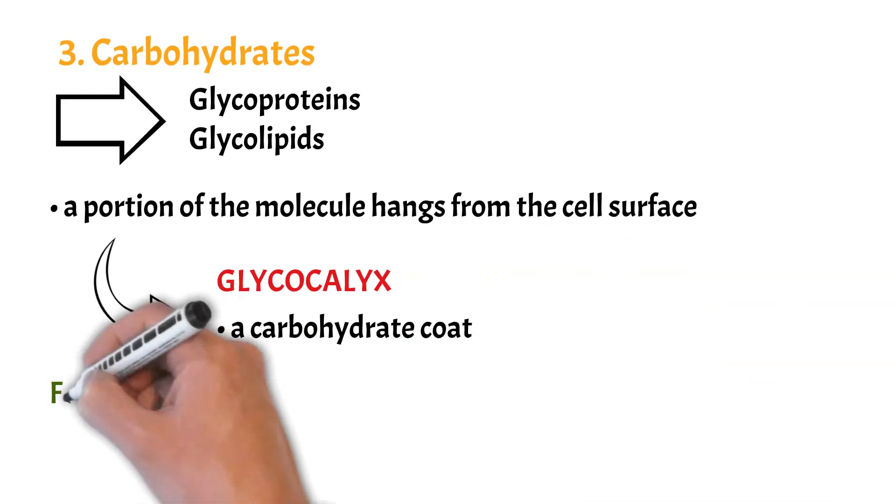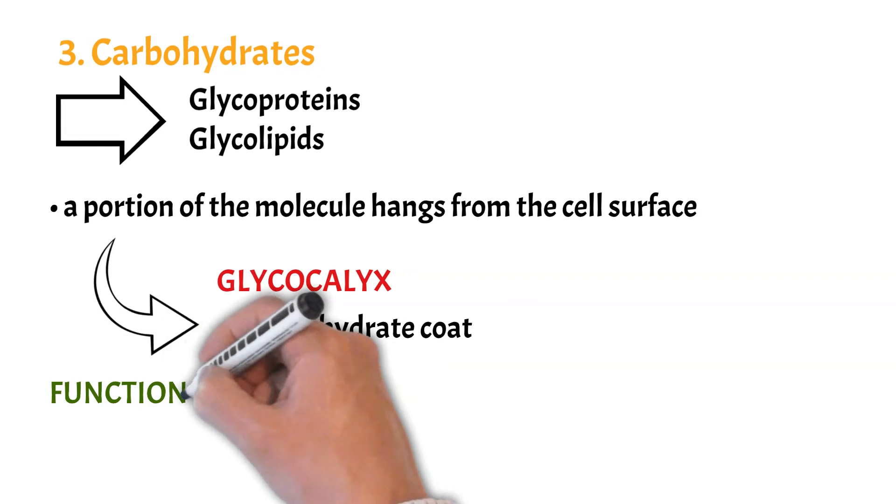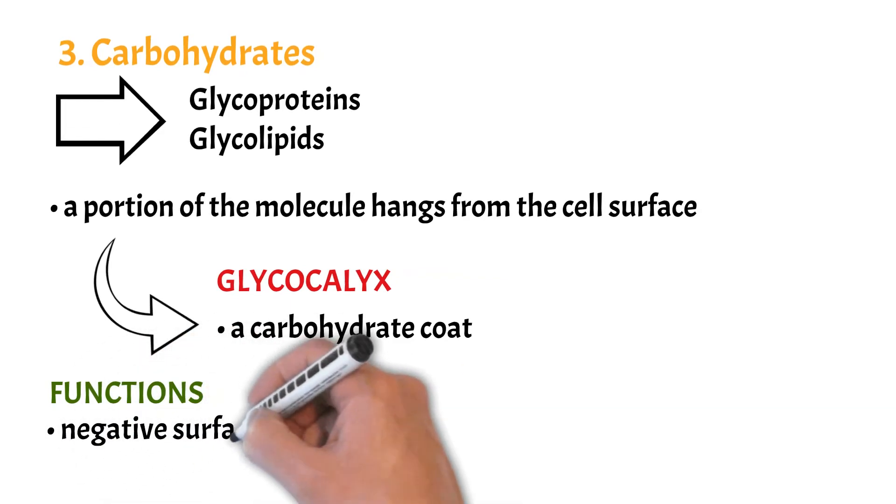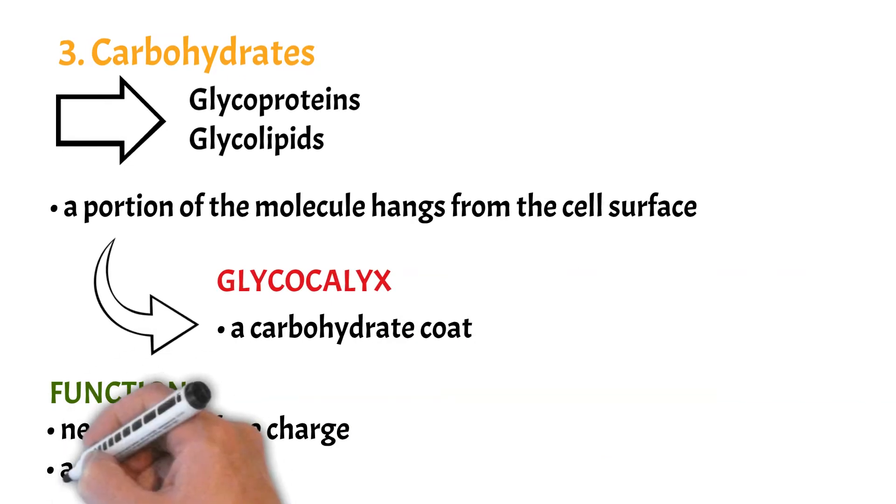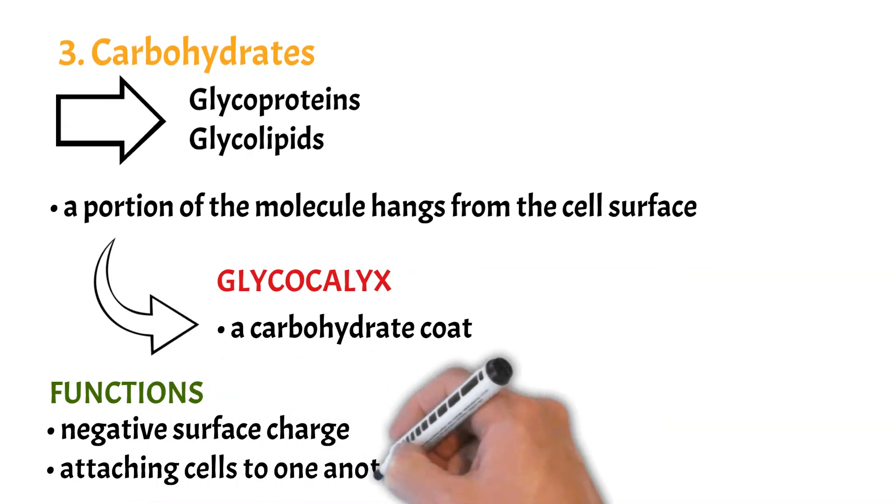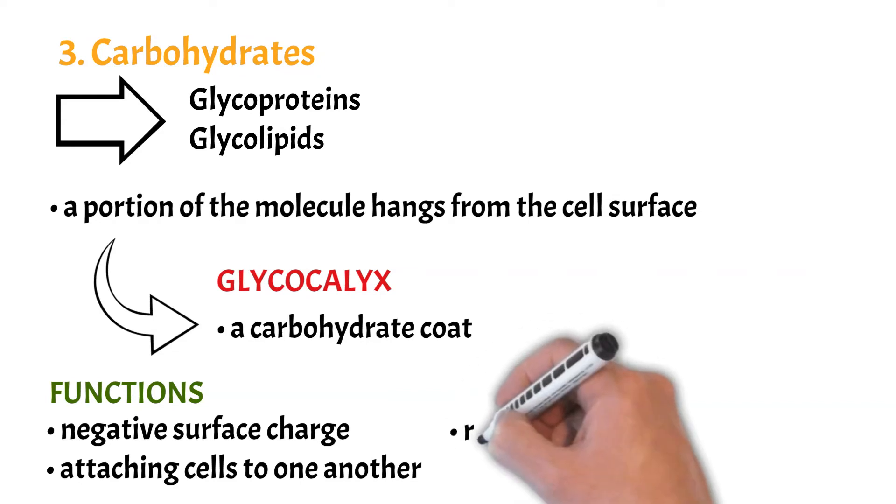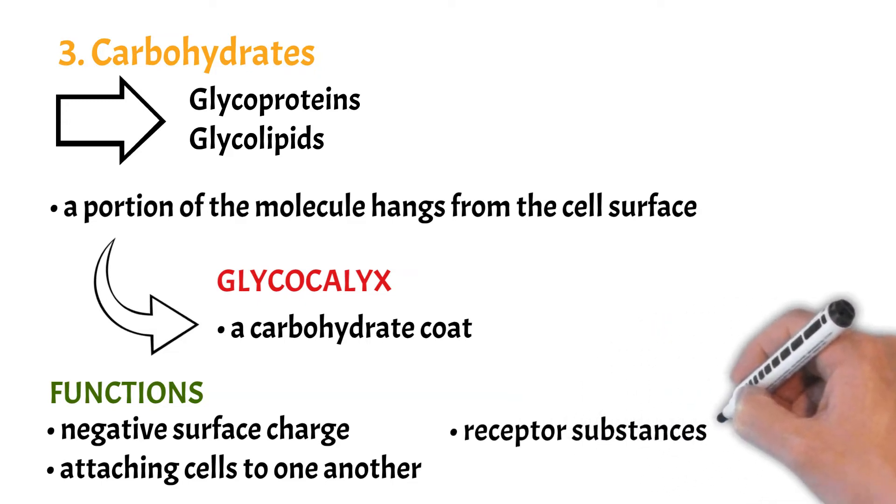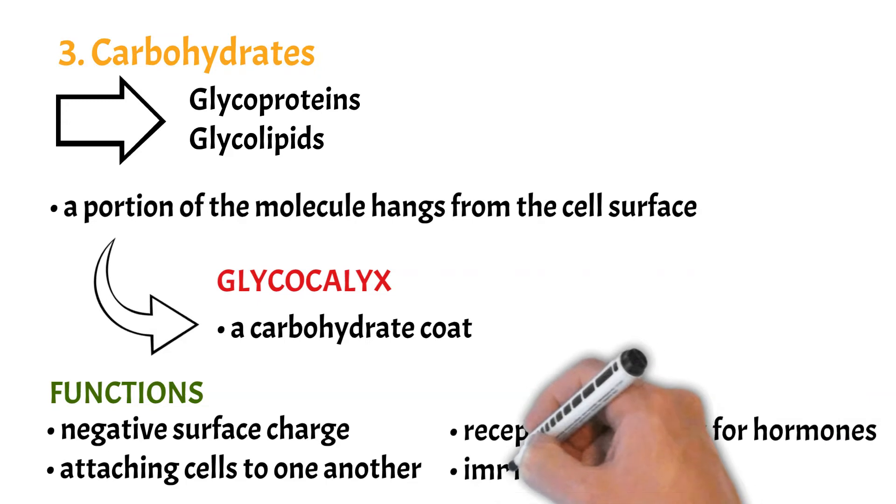There are several functions of the carbohydrate molecules. Many of them have a negative electrical charge, which creates an overall negative surface charge that repels other negative objects. The glycocalyx of one cell can sometimes attach to the glycocalyx of another cell and then attach cells to one another. Many carbohydrates serve as receptor substances that bind hormones and some even enter into immune reactions.